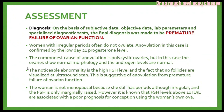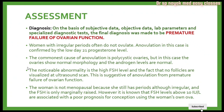The noticeable abnormality is the high follicle stimulating hormone level and the fact that no follicles are visualized on ultrasound scan. This is suggestive of anovulation from premature failure of ovarian function. The woman is not menopausal because she still has periods, although irregular, and the FSH is only marginally raised. However, FSH levels above 10 IU per litre are associated with a poor prognosis for conception using the woman's own ova. This patient has an FSH of 11.1 IU per litre, which is above 10, indicating a poor prognosis for natural conception.